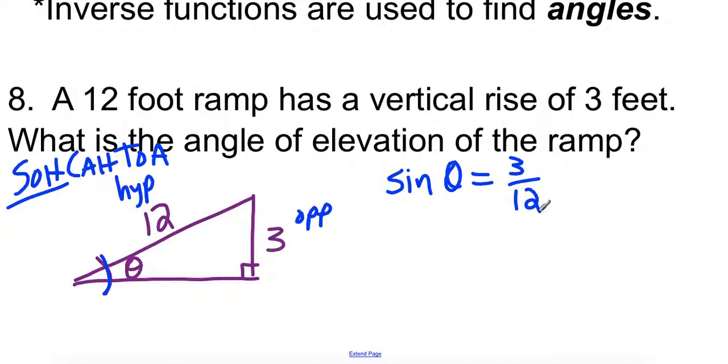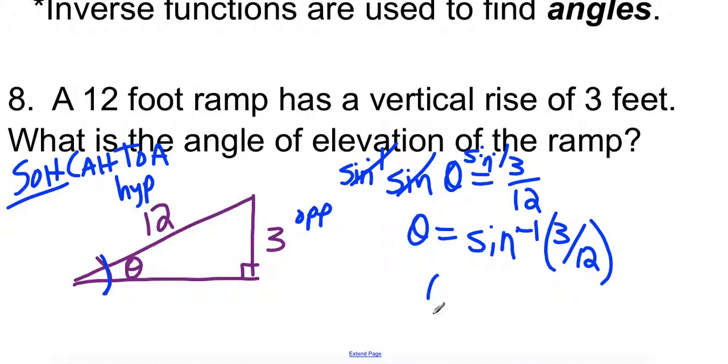Now we are trying to find out what theta is. We're trying to find that angle. So I need a way to undo sine. I need the opposite of sine. Well, the opposite of sine is inverse sine. So I'm going to take the inverse sine of both sides. Inverses cancel each other out. So inverse sine and sine will cancel each other out. So then I'm just left with theta is the inverse sine of 3 twelfths. So now you're going to put that into your calculator. You'll hit the second and sine. That gets you inverse sine. And then you do 3 twelfths. And the answer should be 14.5 degrees.